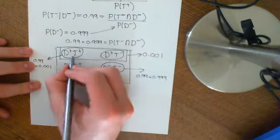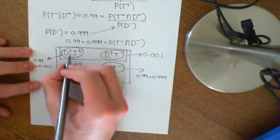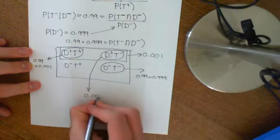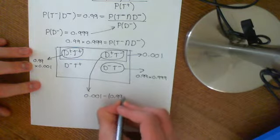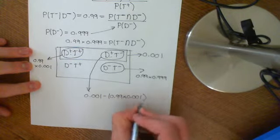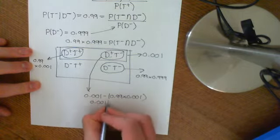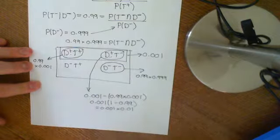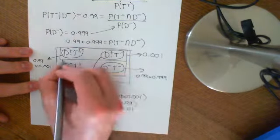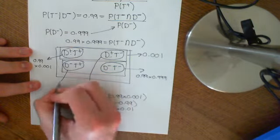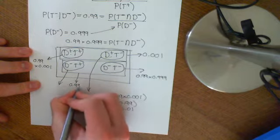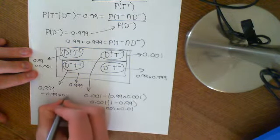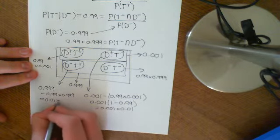Therefore, the union of the disease-positive and test-positive outcome with the disease-positive and test-negative outcome makes the entire diseased set. So the probability of having disease and testing positive plus the probability of having disease and testing negative must equal 0.001. This is therefore equal to 0.001 minus 0.99 times 0.001 — factoring out gives 0.001 times 0.01. Using the same trick, the probability of not being diseased and testing positive is 0.999 minus 0.99 times 0.999, which equals 0.01 times 0.999.